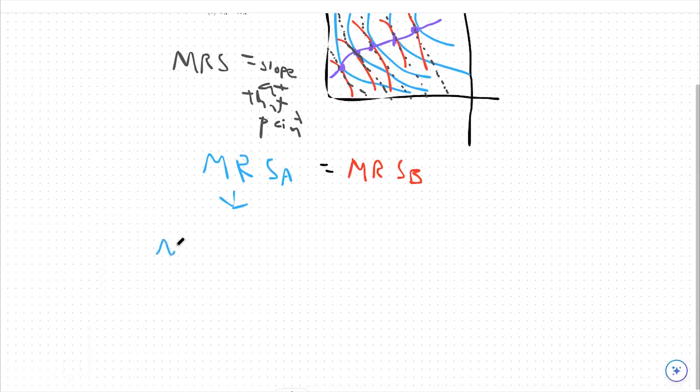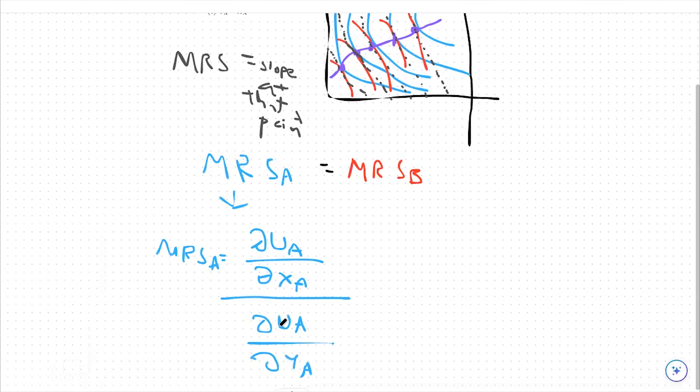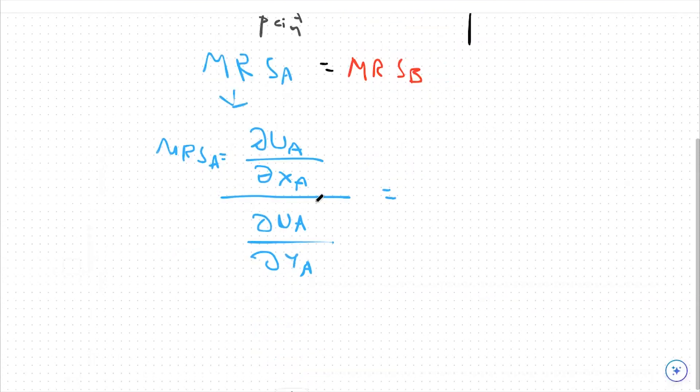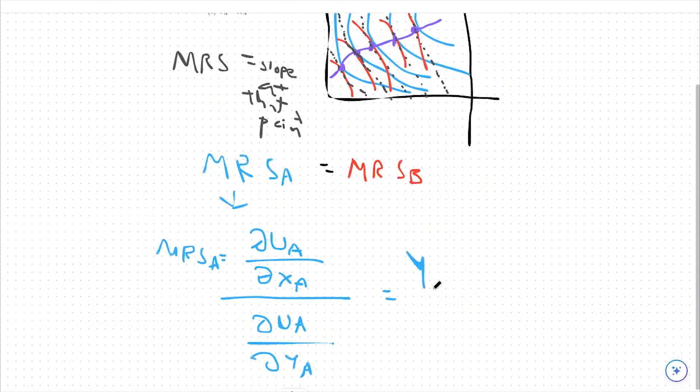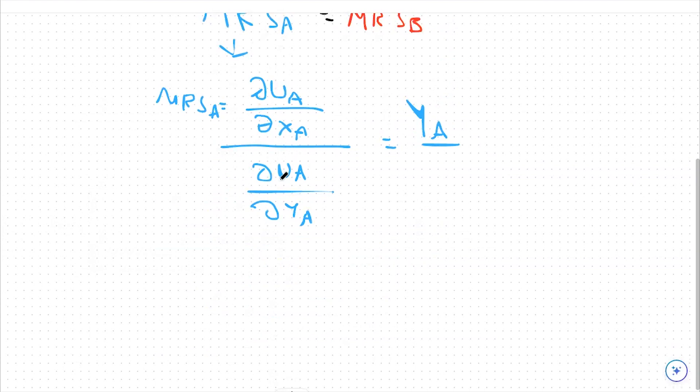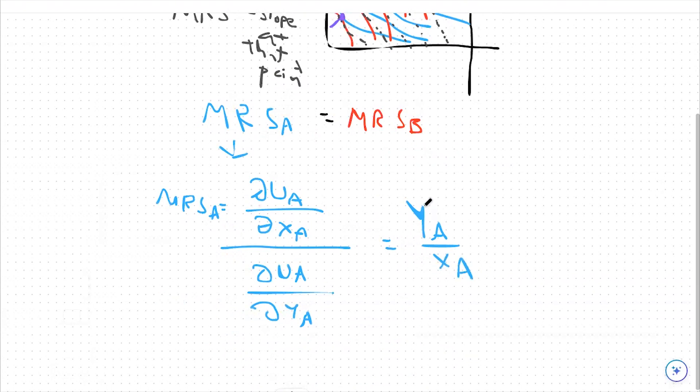Remember, our MRS is the partial derivative of our utility function, in this case of person A, with respect to XA, or our first good, and then we're going to put that over the partial derivative of utility A with respect to our second good, or YA. So we're just taking this utility function right here, and we're putting the partial derivative with respect to XA over the partial derivative with respect to YA. Our partial derivative with respect to XA of this utility curve is just going to be YA, and the same opposite is true here. The utility of A partial derivative with respect to YA would be XA. So my MRS here is YA over XA.